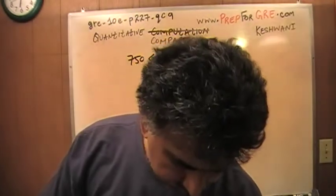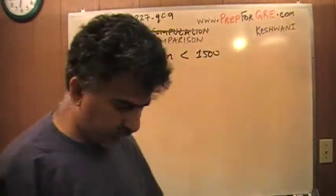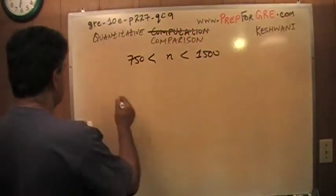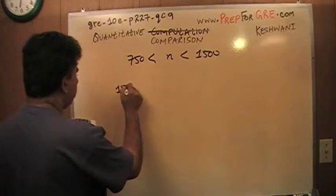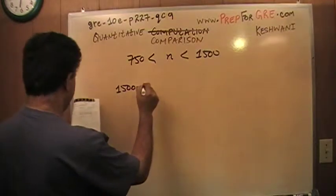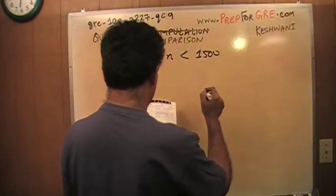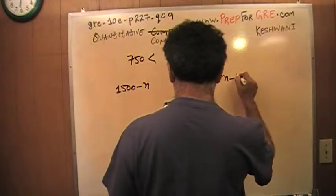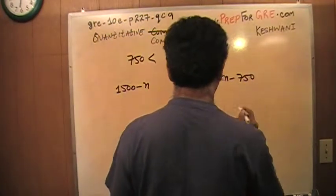And what is it that we are asked to compare? We are asked to compare this quantity, 1500 minus N versus N minus 750. Let's take a look at it.